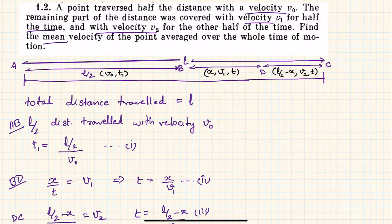and B to C also is l/2. I have also mentioned some important information. For example, in the first half of the journey v0 is the speed and t1 is the time taken.